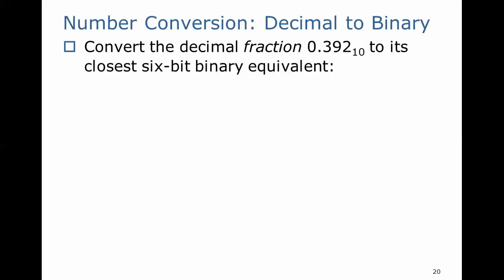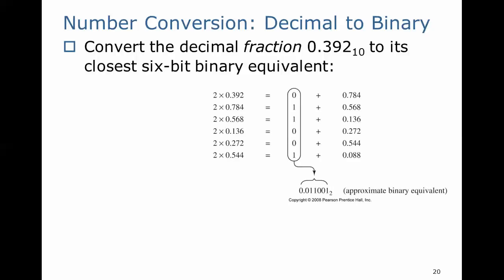Now let's convert the decimal fraction 0.392 base 10 to its closest 6-bit binary equivalent. In this case, we're not going to divide our decimal value by 2 repeatedly, but we're going to multiply it by 2 repeatedly. We take 0.392, we multiply it by 2, that gives us 0 plus the decimal portion 0.784. Take 0.784, we double that again, and that gives us 1.568.